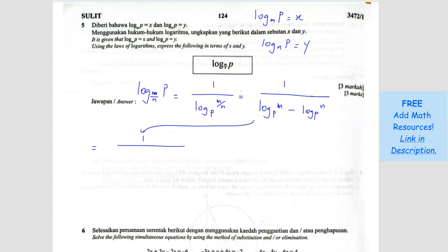So it becomes 1 over, and it becomes fraction again, 1 over log P base M minus 1 over log P base N. So basically I turn it into a fraction again so that I can substitute these two.